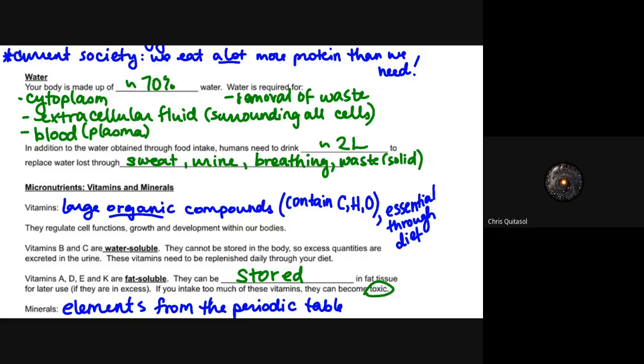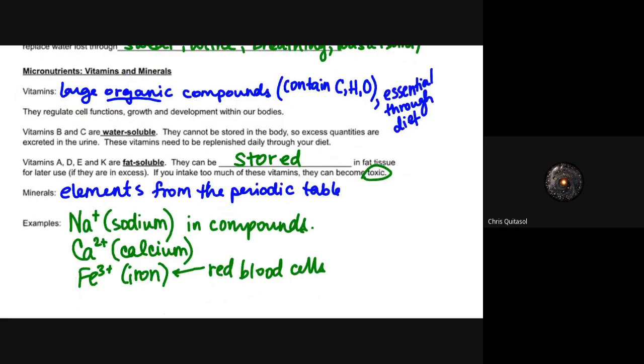Lastly, micronutrients are the things that are inorganic compounds or organic compounds in the sense of the fact that they tend to have that CHNO. So vitamins are those organic compounds. They regulate cell function and growth. They tend to be water soluble in the cases of vitamin B and C, and they cannot be stored in the body, so excessive quantities are excreted in urine. So that's why if you take a multivitamin, your urine tends to be a little bit darker and it tends to have more of those vitamins dissolved in it, because your body can only absorb so much of it and it needs to be consistently replenished through your diet.